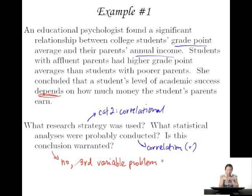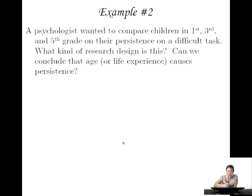Directionality is probably not as big of an issue here, because parent income is not quite affected by students' GPA scores. The link of GPA affecting parent income is harder to imagine, so that's probably not likely to be the case.